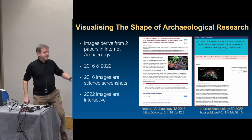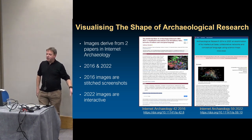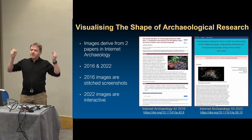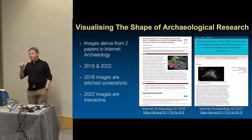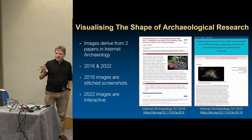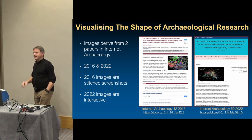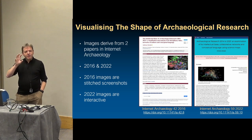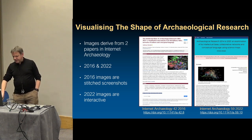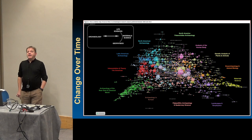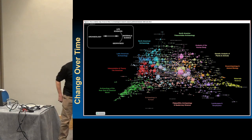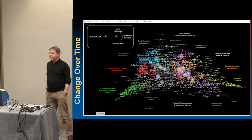There's a piece published in 2016 in Internet Archaeology — open access. The original maps are screenshots stitched together, gigantic 120-megabyte files. More recently — just last Monday — you can now look at all the maps interactively, including the earlier period. This gives you a sense of what you can actually do with this technology. Here is archaeology as a field, showing everything we cite. Slap bang in the middle is the Journal of Archaeological Science.